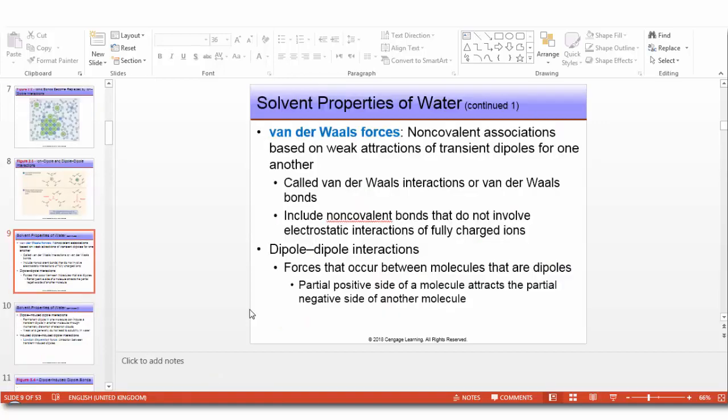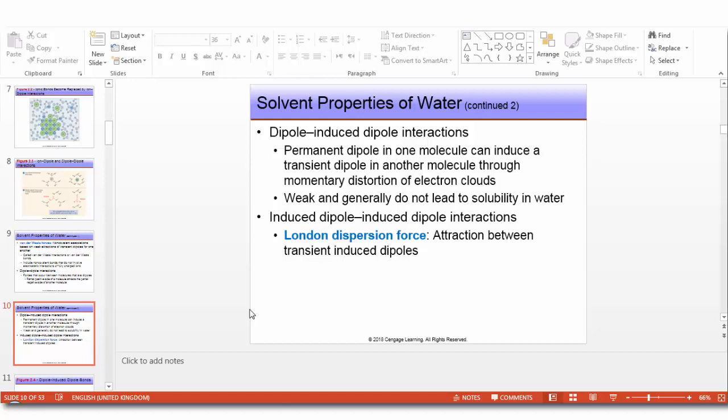Continuing with solvent properties of water, we have other types of forces called van der Waals forces. They are non-covalent associations based on weak attractions of transient dipoles for one another. They include non-covalent bonds that do not involve electrostatic interactions of fully charged ions. Dipole-dipole interaction, forces that occur between molecules that are dipoles, where the partial positive side of a molecule attracts the partial negative side of another molecule. Another type called dipole-induced dipole interactions, where permanent dipole in one molecule can induce a transient dipole in another molecule through momentary distortion of electron bonds. Weak and generally do not lead to solubility in water. The last type called induced dipole-induced dipole interaction, or London dispersion force.